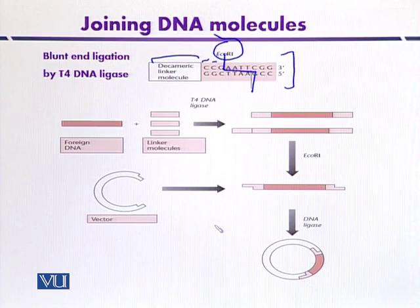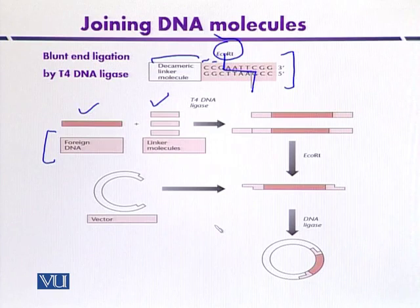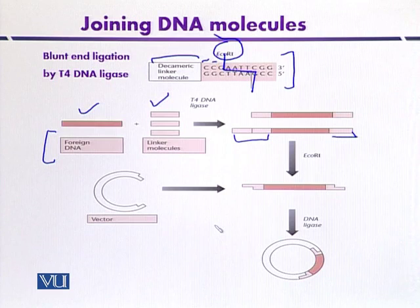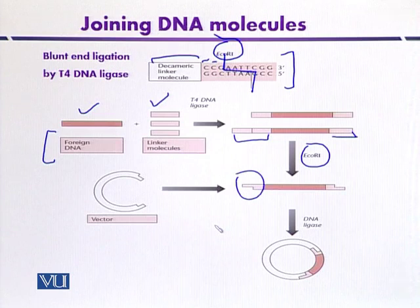We can join these linker molecules with foreign DNA or DNA fragments. This foreign DNA is mixed with synthetic linker molecules and DNA ligase mediates their joining. This linker molecule contains a restriction site for EcoR1 enzyme, so before ligating with the vector molecule, it is treated with restriction enzyme EcoR1 so that we can get cohesive or sticky ends.